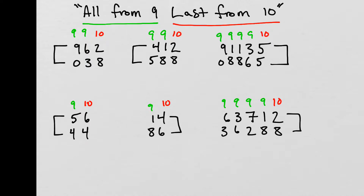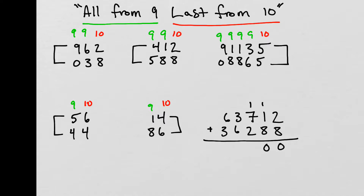If we add the two complement numbers from the last problem together, the end result will be a base number. Adding them: 2 plus 8 gives us 10, write a 0, carry a 1. Then 1 plus 1 plus 8 equals 10, write a 0, carry a 1. Then 1 plus 7 plus 2 equals 10, write a 0, carry a 1. Then 1 plus 3 plus 6 equals 10, write a 0, carry a 1. And 6 plus 3 plus 1 gives us 10. The formula all from 9 last from 10 quickly finds the complement number which, added to the original, gives us a base number.